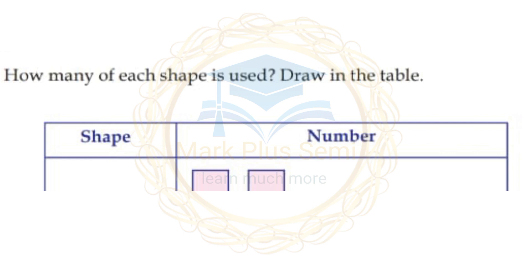Which shape is the most? Put a tick mark against it. The triangle is the most, with 12. Triangle — tick!